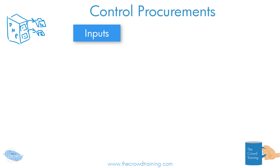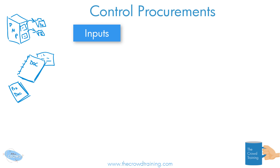You're also going to have a series of project documents that are referenced and used — those documents could be the schedule, the risk register, or even the stakeholder register. And you're going to have to look at the procurement documents you've been using up to this point: how you decided which ones to use, what they're for, and, of course, our contracts — the agreements that we have with other departments, partners, vendors, and suppliers.